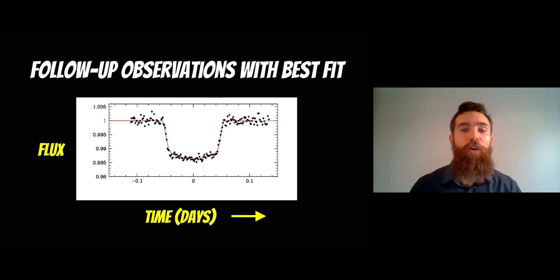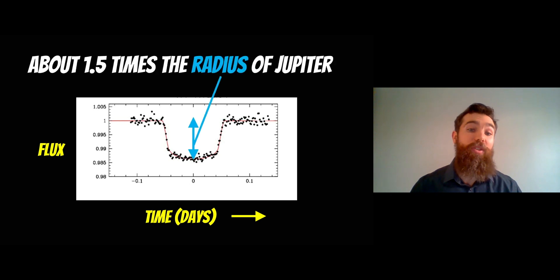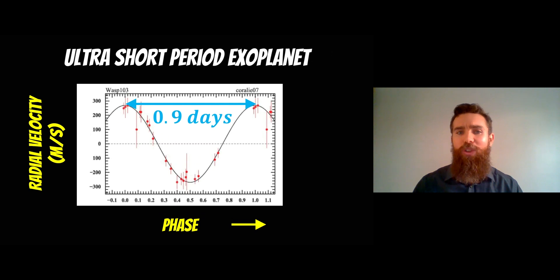From those follow-up observations and the original one, it was found that this planet had a radius of about one and a half times Jupiter. So it's a fairly large planet. Interestingly, it's also a very close-in planet.